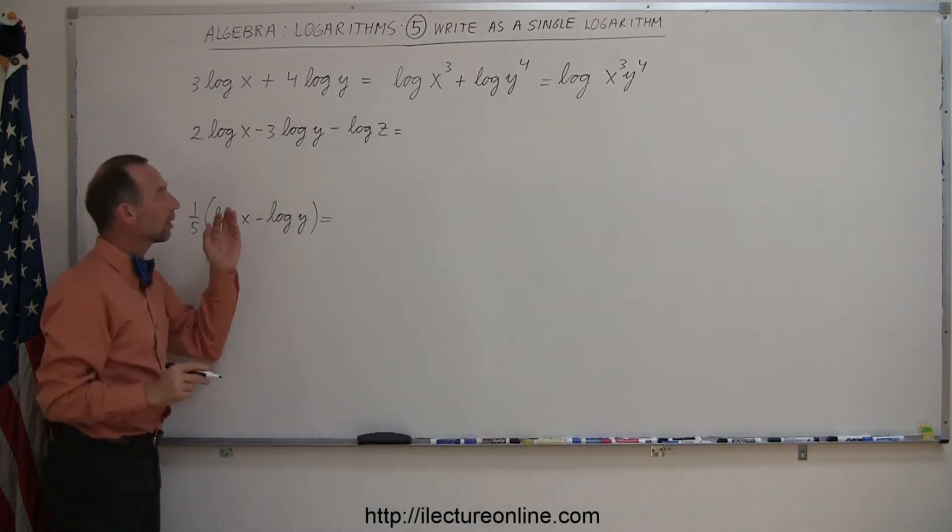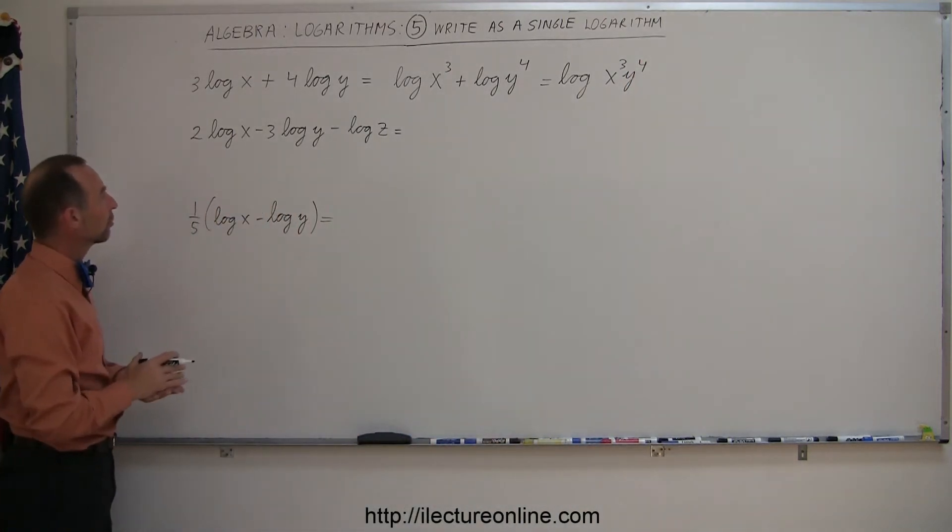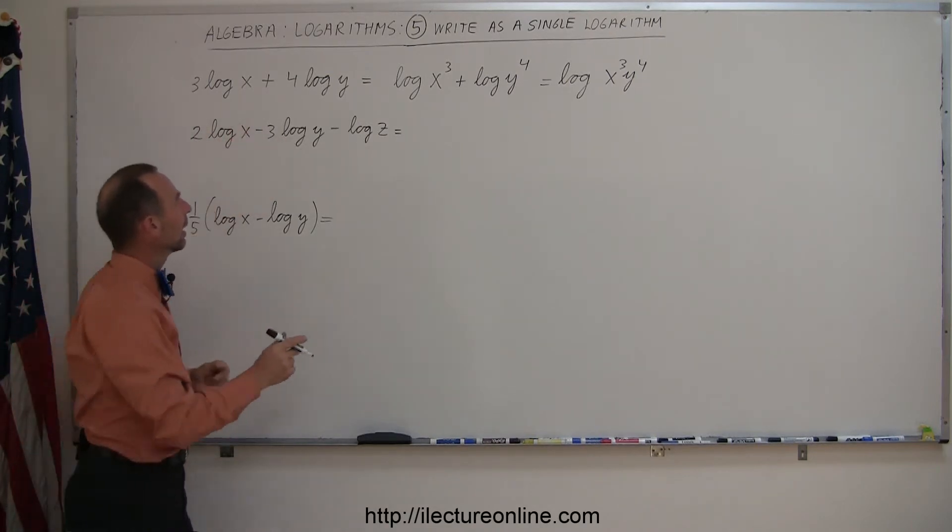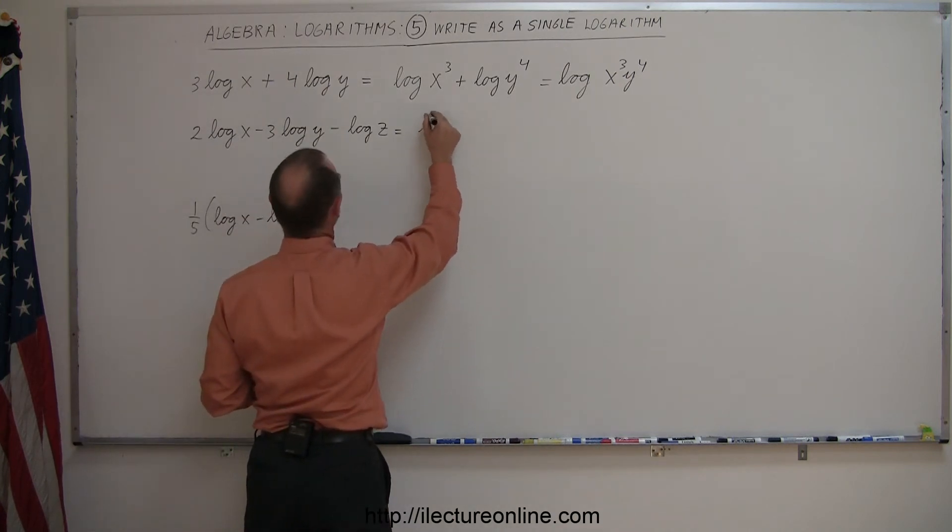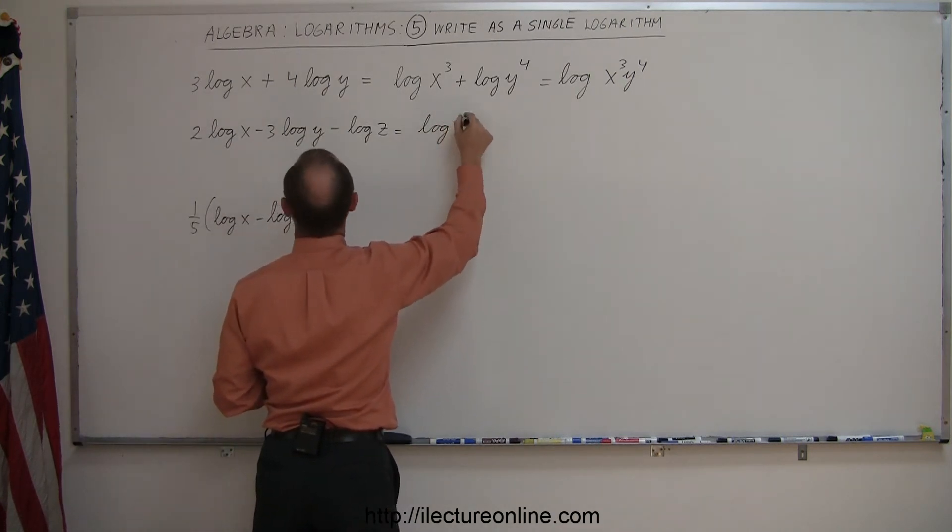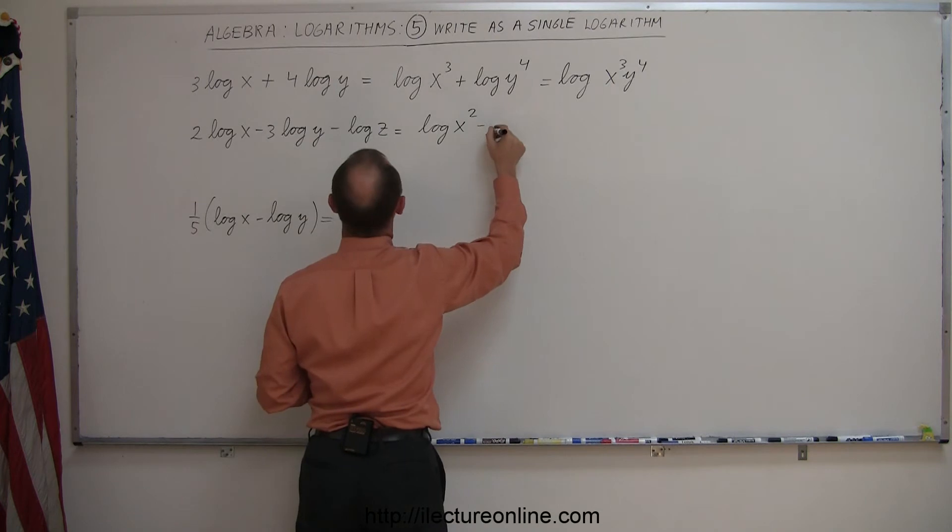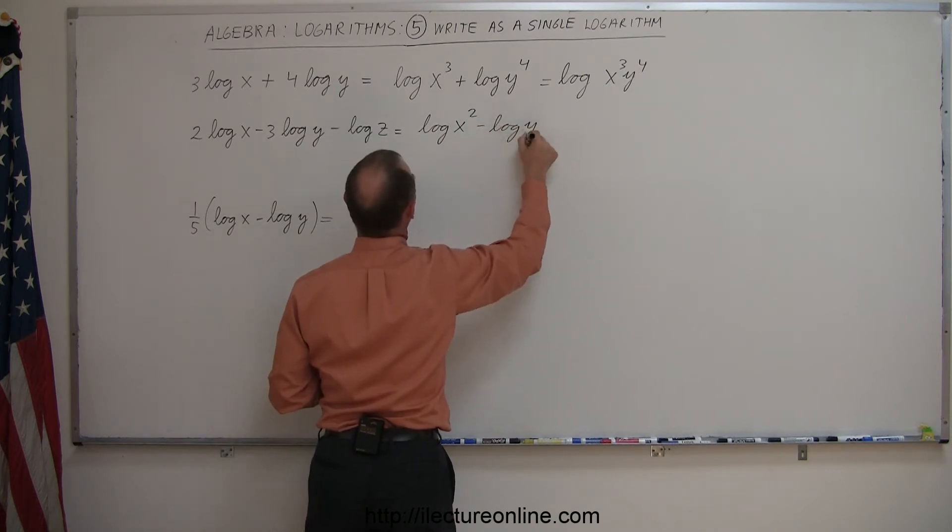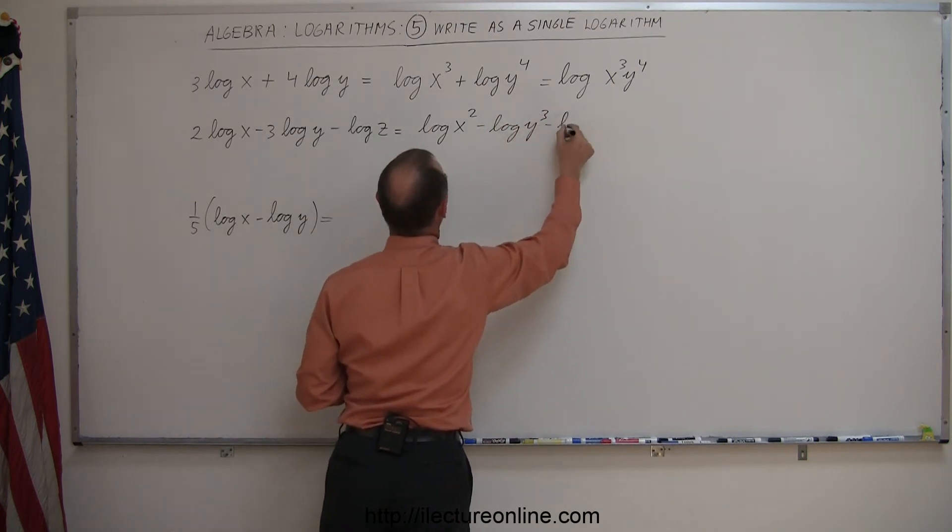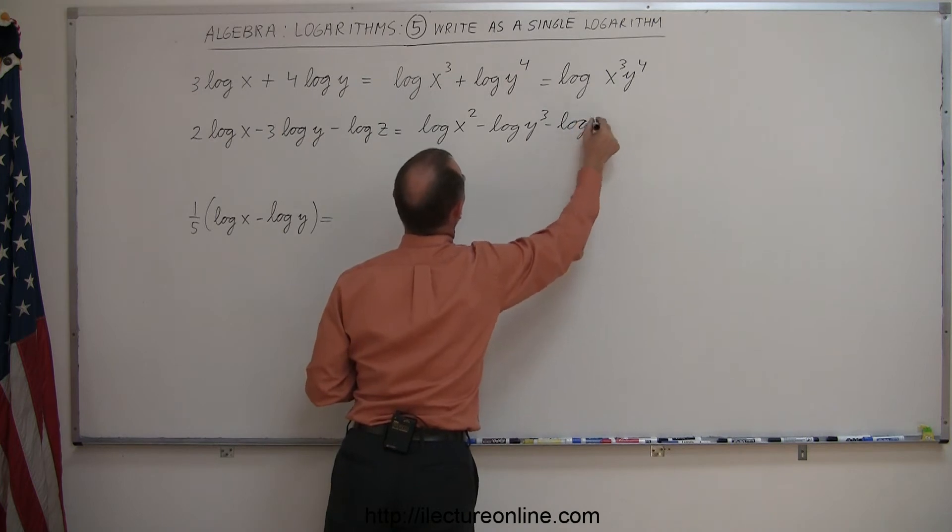Looking at our next example, now we have three terms. Here we have 2 times the log of x minus 3 times the log of y, so we can use that and put that as an exponent. So we have the log of x squared minus the log of y cubed minus the log of z.